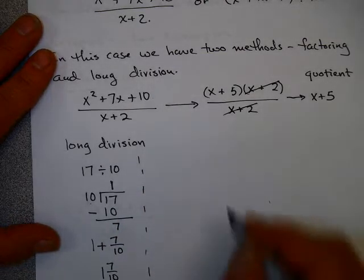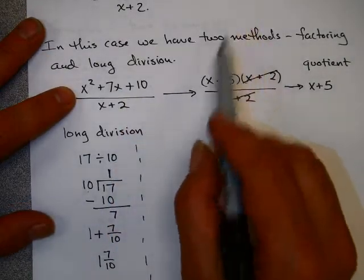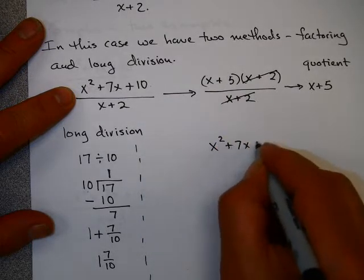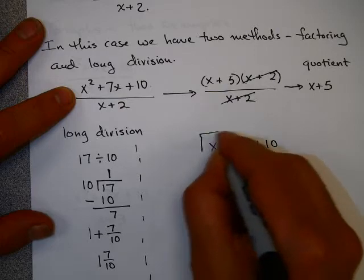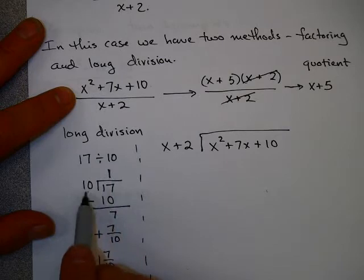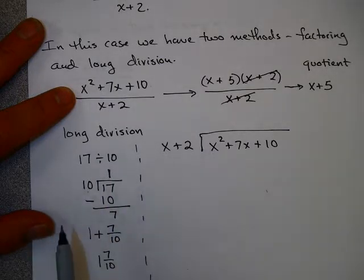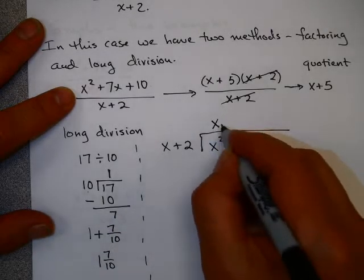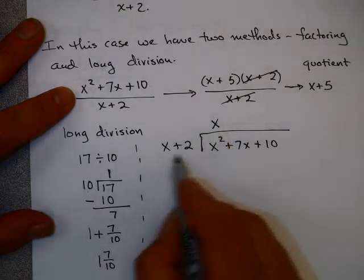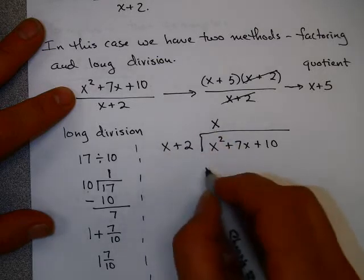Now, I went through this process because with polynomials we follow the same thing. Here, we have x squared plus 7x plus 10, and we're going to divide that by x plus 2. Just like the first question you asked here is how many times does this go into this? How many times does x go into x squared? The answer would be x times. And just like here, you did 1 times 10 and got our sample 10, I'm going to do x times this. But notice, I have to multiply by x by both of these terms.